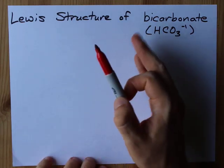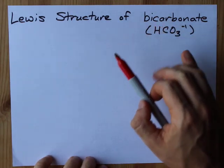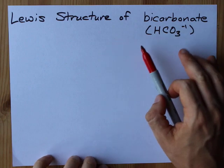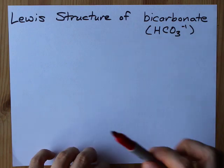All right, we're going to draw the Lewis structure of the bicarbonate ion, that's HCO3 with a minus one charge.